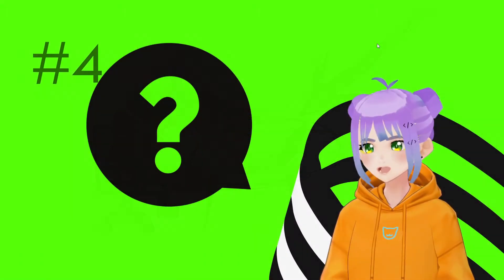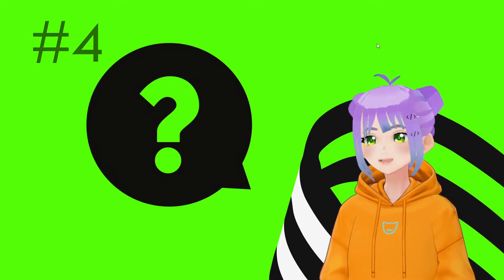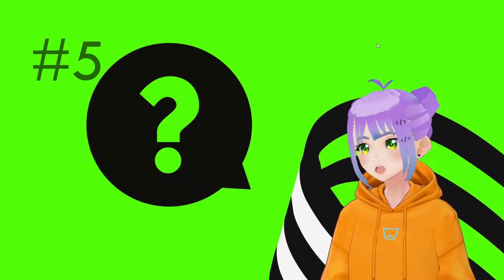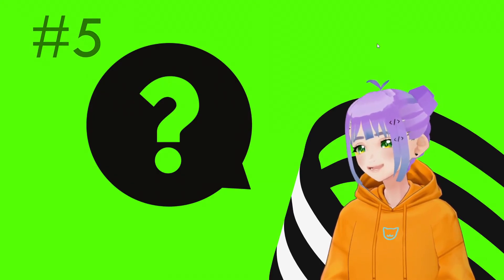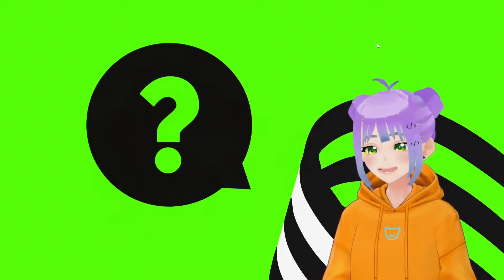Why are my desk and computer set too low? Because I'm too tall for this desk. Why am I too tall for this desk? Because there is a 15 centimeter difference between my eye level and the desk. Now that we've uncovered the root problem...